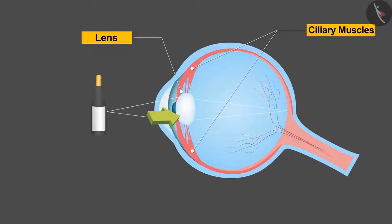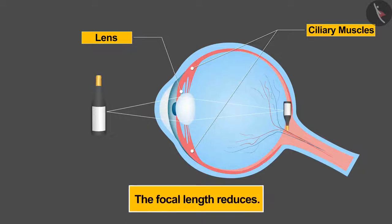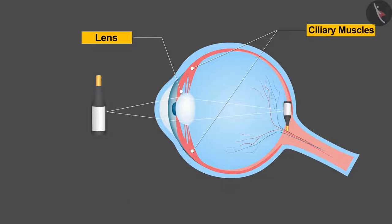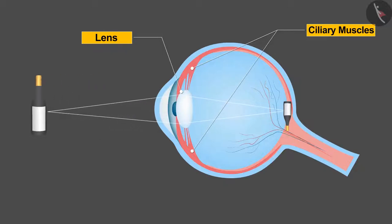In order to see a nearby object, the ciliary muscles contract, then the lens becomes thicker and the focal length reduces, and we are able to see nearby objects comfortably. In the second case, the ciliary muscles get relaxed which makes the lens thinner and the focal length increases, which helps us to see the distant objects clearly.